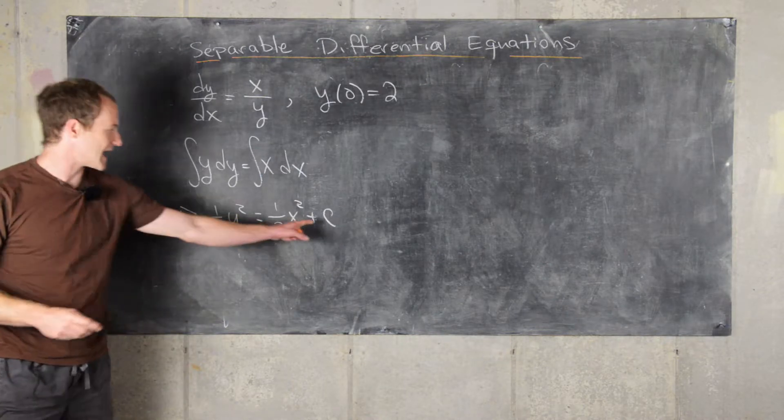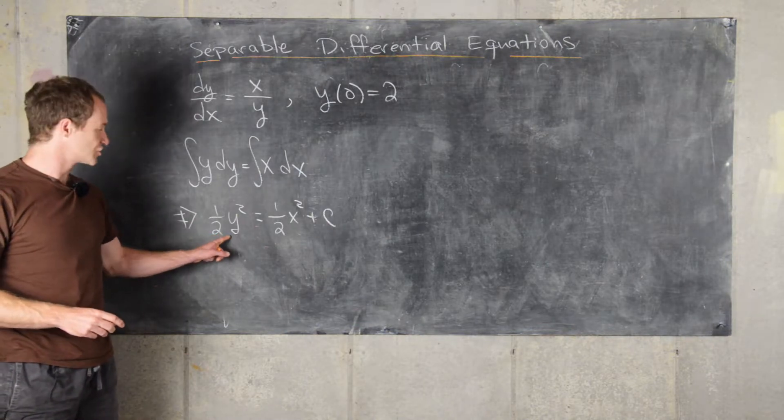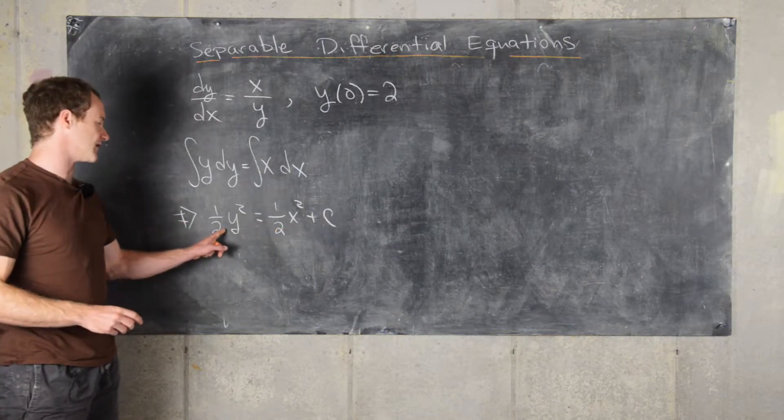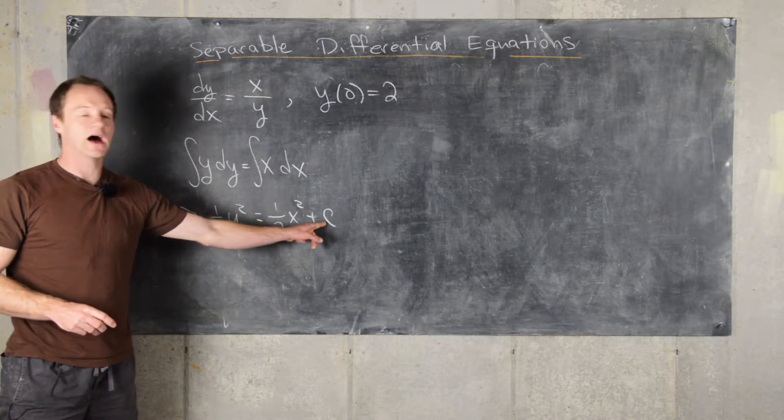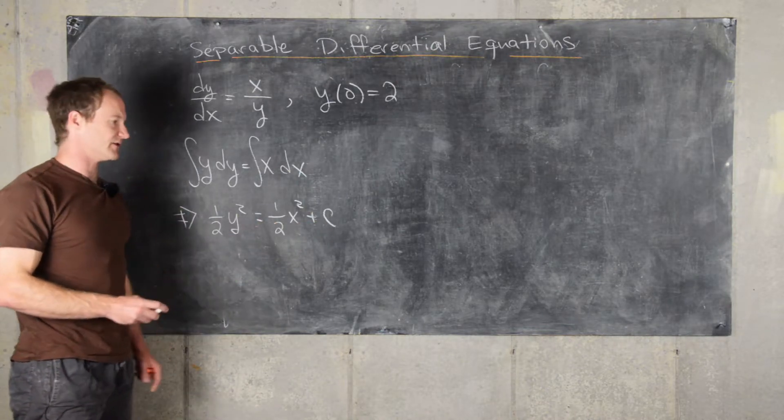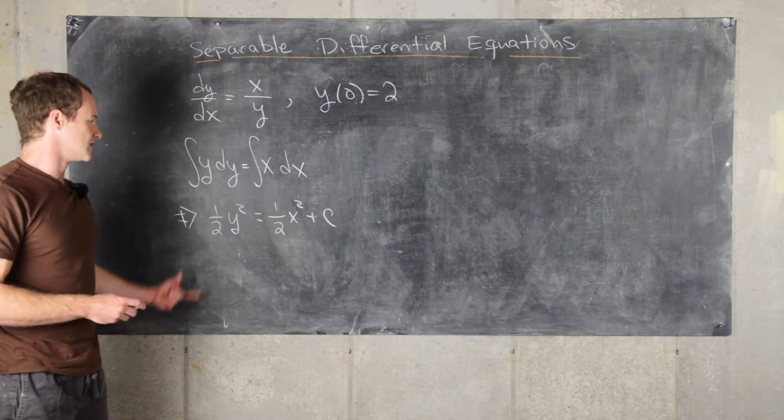You might ask why we did a constant of integration on the right-hand side and not on the left-hand side. The truth is we could have done a constant of integration on both sides, but those would have combined to another constant. Since they're all just constants, we can absorb them together as we have here.